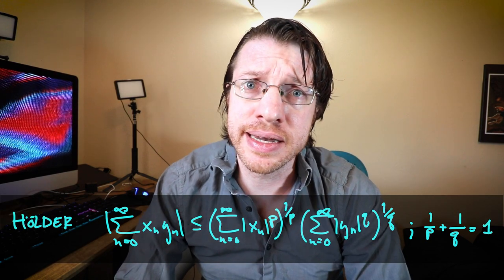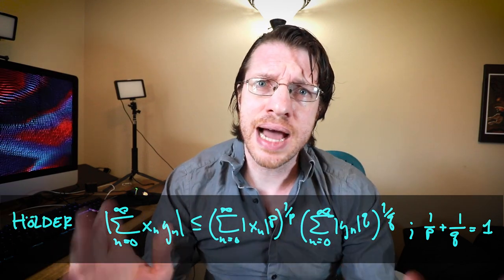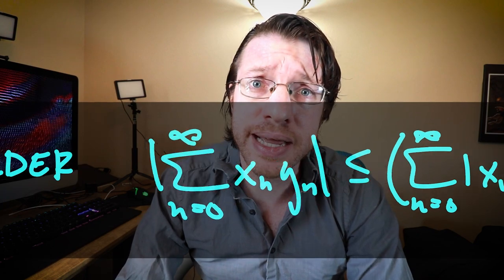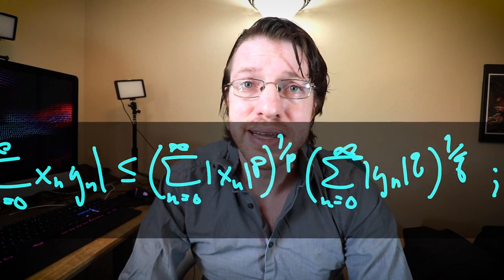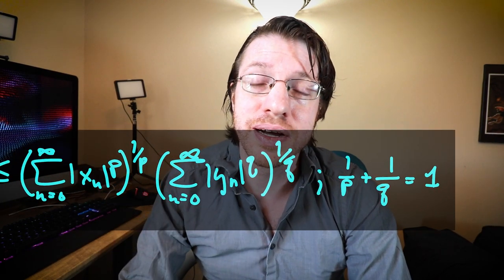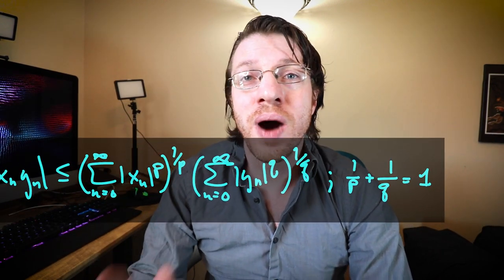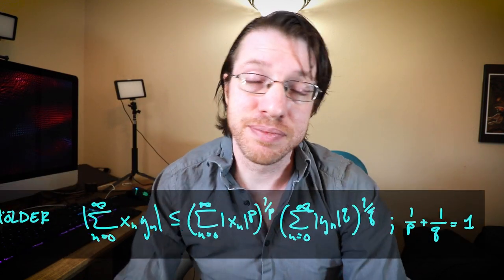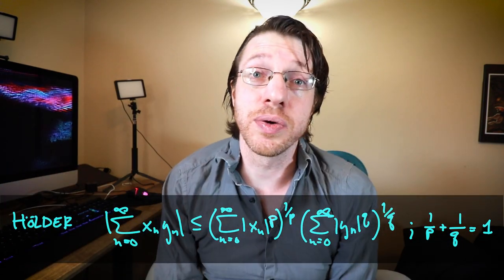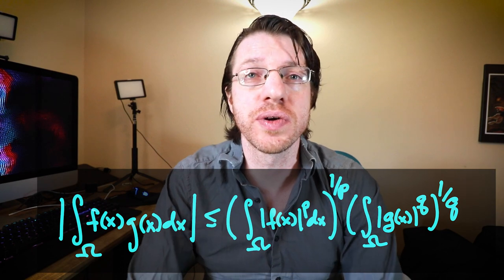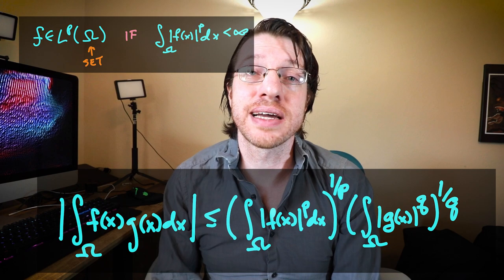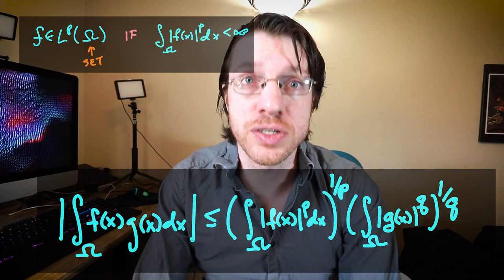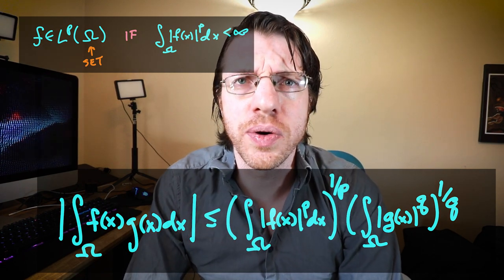But you get pretty much the same thing as what you got for Cauchy-Schwartz. So you take a look at the sum of, say, Xn times Yn, and this could be an infinite series. Take the absolute value of this, and it can be bounded by the Pth root of the sum of Xn to the P times the Qth root of the sum of Yn raised to the Q, and absolute values on the inside of those sums. And that's the Holder inequality, and this directly transports over into the integral case.